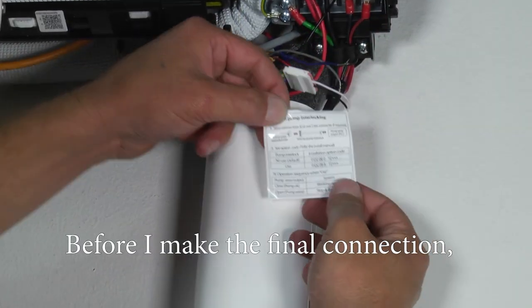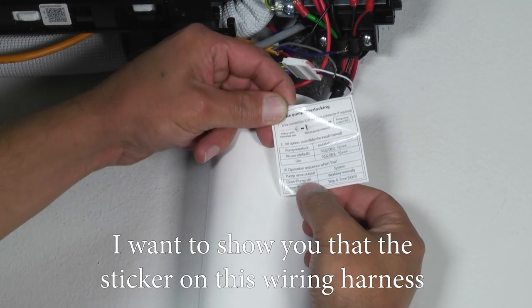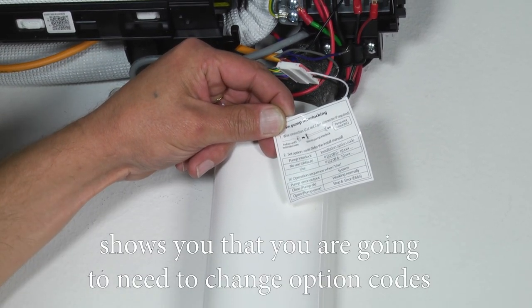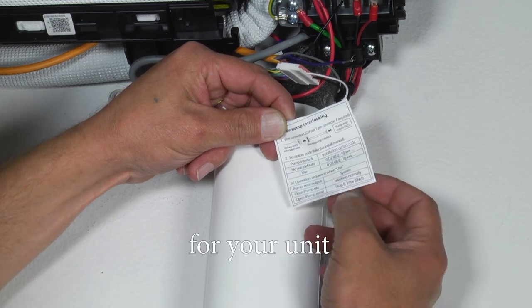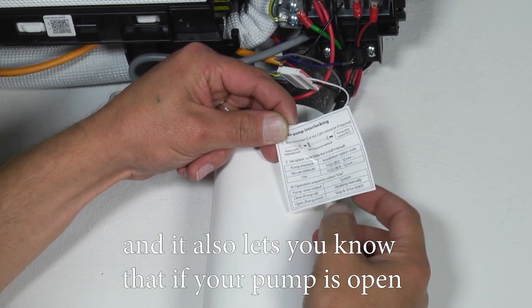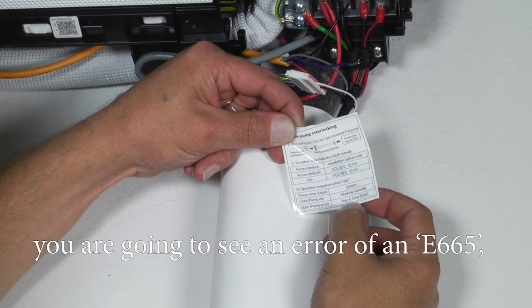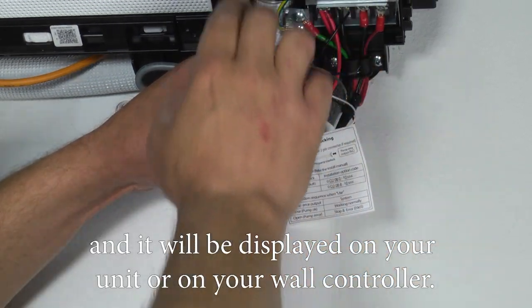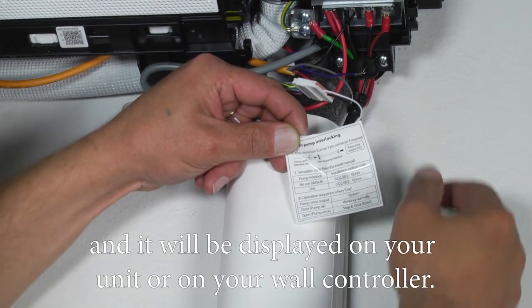Before I make the final connection, I want to show you that the sticker on this wiring harness shows you that you're going to need to change option codes for your unit. And it also lets you know that if your pump is open, you're going to see an error of an E665 and it'll be displayed on your unit or on your wall controller.